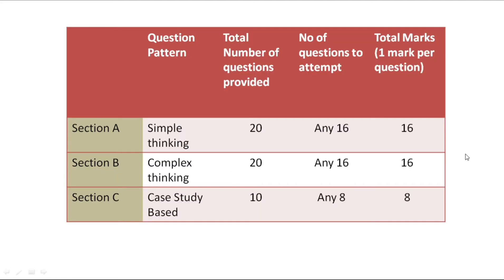There will be three sections: Section A, Section B, and Section C. Section A contains normal, simple thinking MCQs. A total of 20 questions will be provided, and students have to answer 16 questions, each carrying one mark. So Section A carries a total of 16 marks, with four questions being extra or optional.